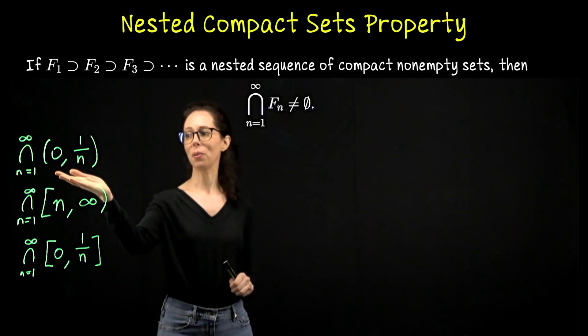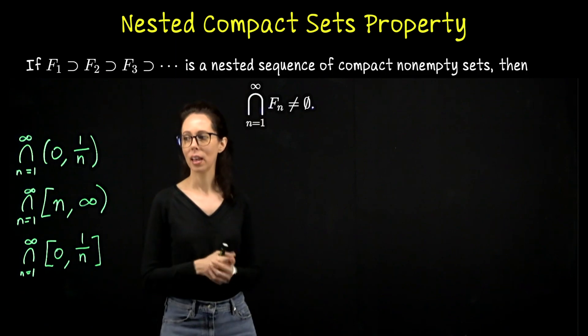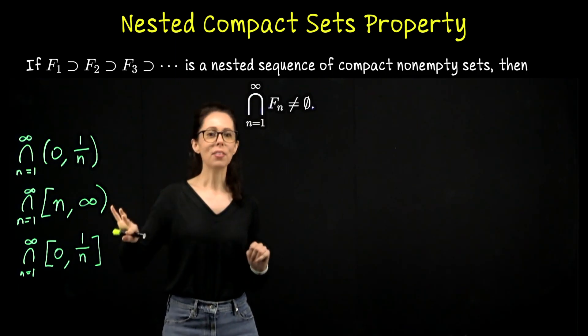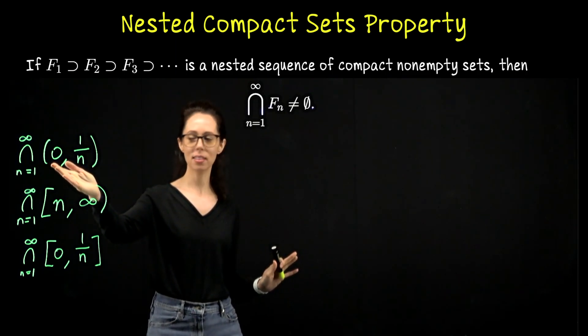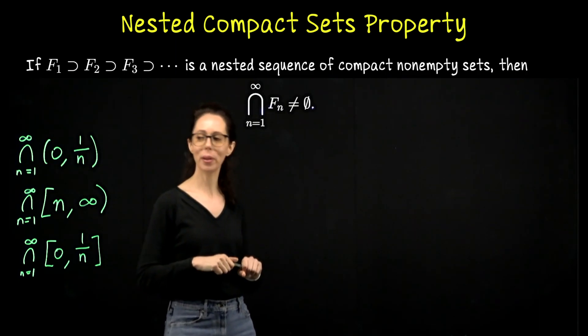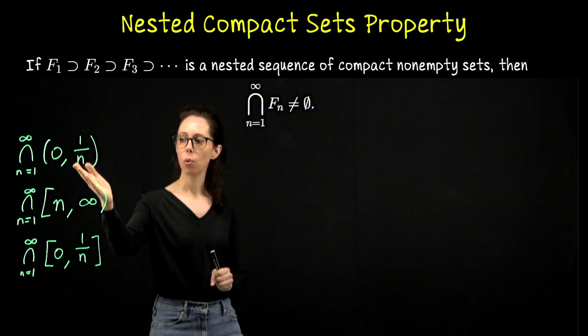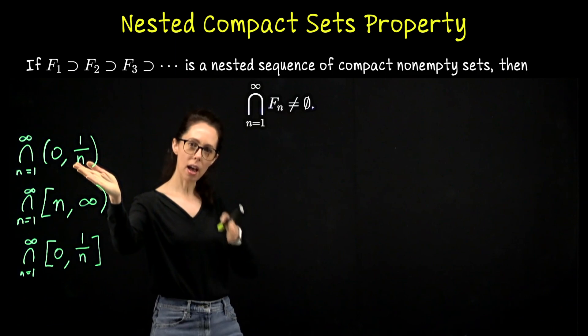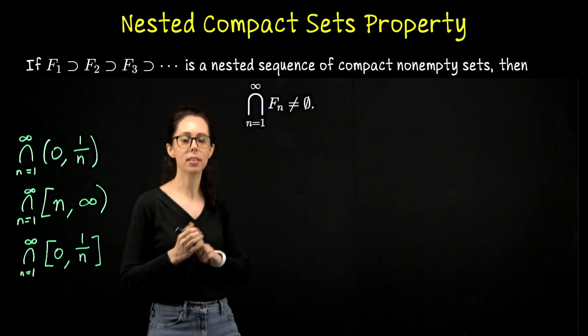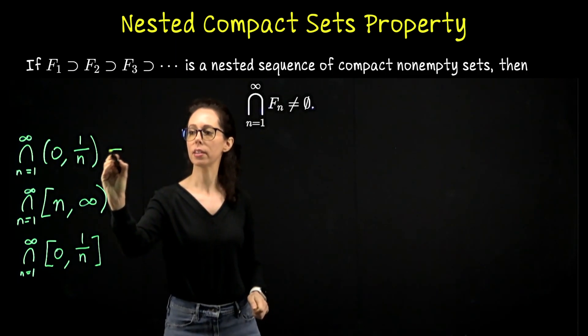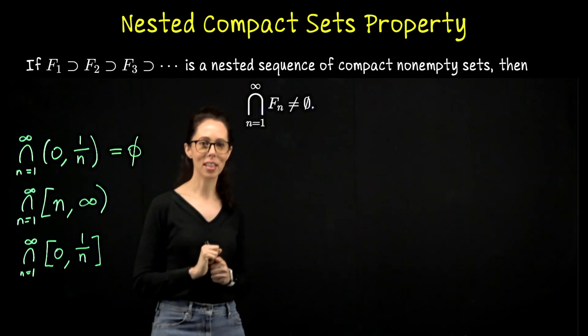For this first example we have a nested family of open sets. Nothing to the left of zero will be in this intersection. Zero is also not in the intersection because it's not in any of these. And if you look at positive numbers, for any positive number we can choose a denominator large enough that that positive number sits to the right. Eventually we can cut away every positive number. That means this intersection is empty. Nothing survives as n goes to infinity.